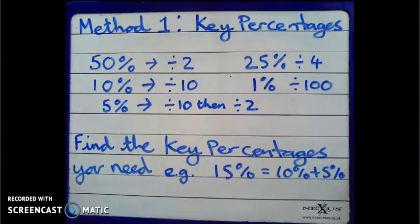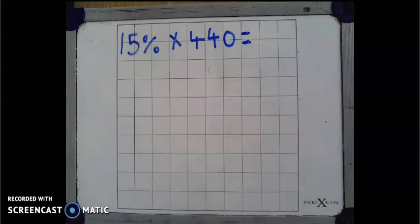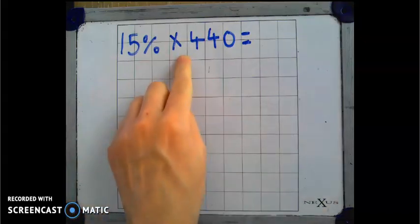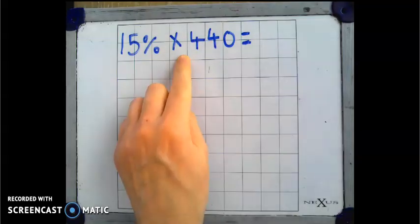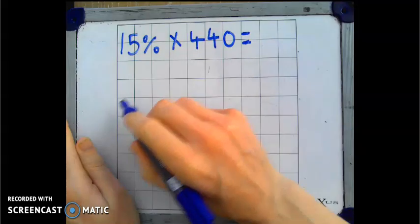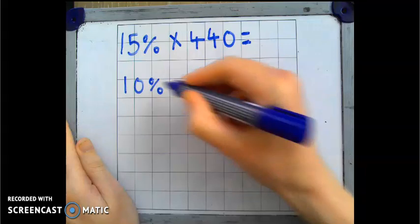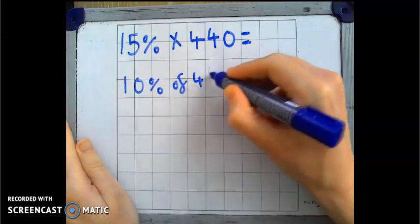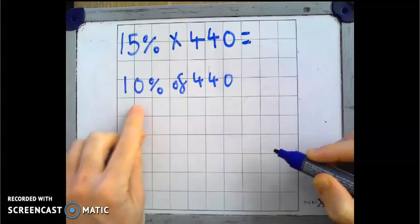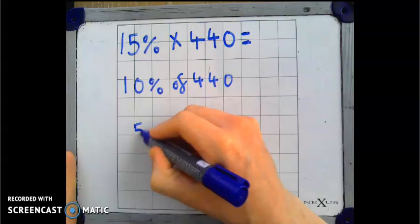Let's try that out with a calculation. 15% multiplied by 440. So as we know, multiply in this instance is the same as meaning of. So first, we're going to find 10% of 440. And after that, we'll need to find 5%, because 10 and 5 make 15.